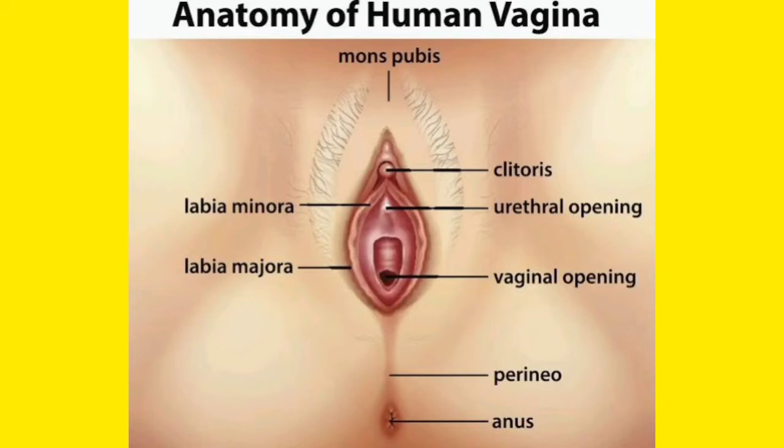Another very notable structure is the clitoris. The clitoris is the stimulatory organ, just like in males they have the glans penis which is the tip of the penis. In the same way the female has the clitoris, which is used during sexual arousal. They also have the vaginal opening, which is the hole through which sexual intercourse occurs.